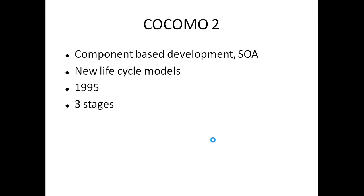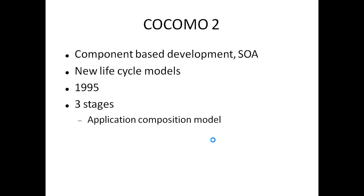In COCOMO 2 there are three stages for software estimation. The software cost can be estimated at the beginning of the project, in the middle of the project, and also at the end of the project. So there are three stages for cost estimation in COCOMO 2, and for the same project we can estimate cost at three different stages.